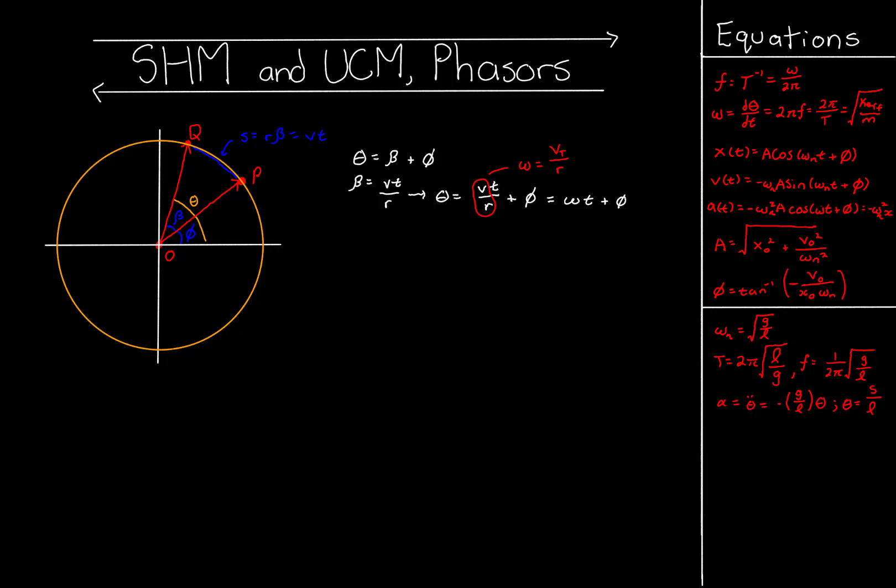If you've studied angular or rotational mechanics, you know that omega equals v*t over r, where omega is simply the angular speed — how many radians we're going through per second, i.e. d-theta/dt. Comparing translational and rotational quantities, omega equals tangential speed v_t over r, just as s equals r*theta. So the total angle theta equals omega*t plus phi, which is the complete phase of the oscillator — and this is where we get the phase inside the cosine for the displacement function.